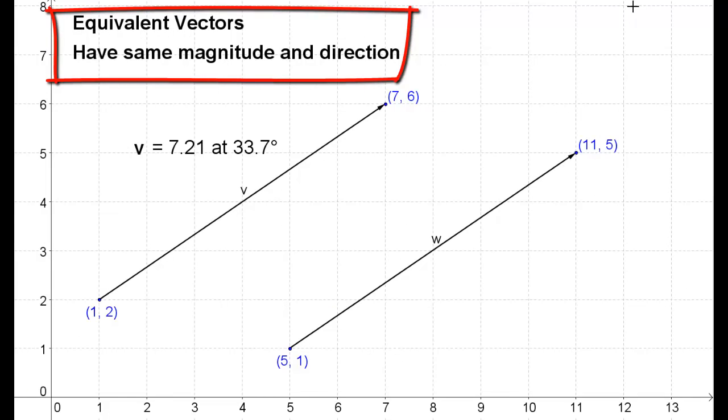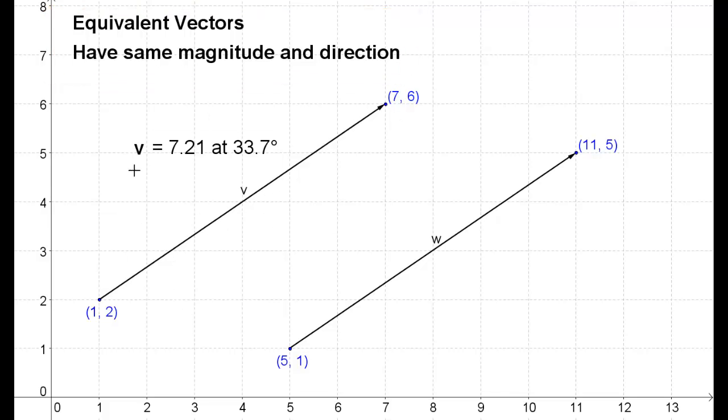If two vectors have the same magnitude and direction, they are called equivalent, and we use the equal sign to denote this. So we take our vector v, which has a magnitude of 7.21 in a direction of 33.7 degrees. And we had another vector in the plane called w that, let's say, started at (5.1, 11.5). We found its magnitude and slope.